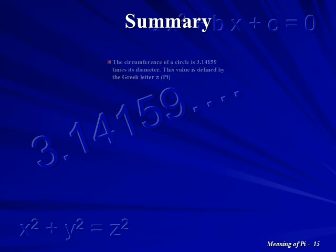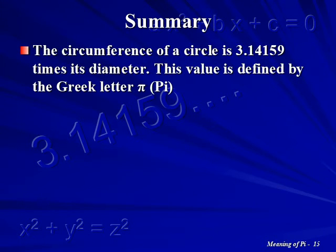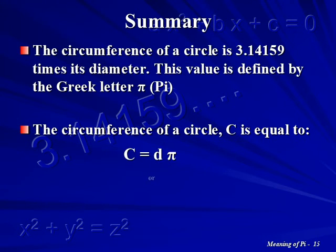In summary, the circumference of a circle is 3.14159 times its diameter. This value is defined by the Greek letter Pi. The circumference of a circle, C, can be calculated by multiplying its diameter by Pi or by 2 times its radius times Pi.